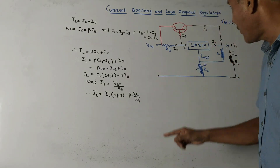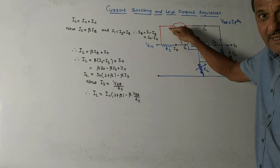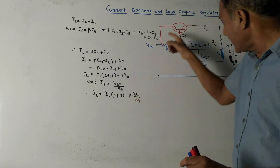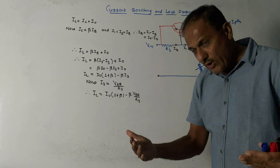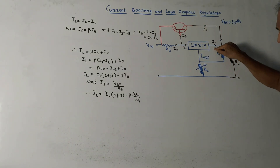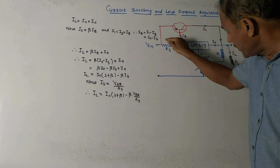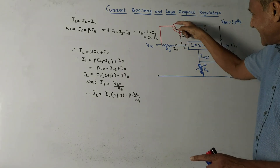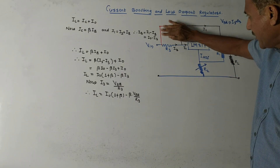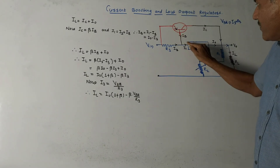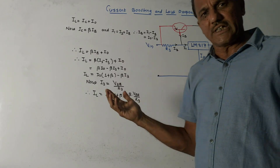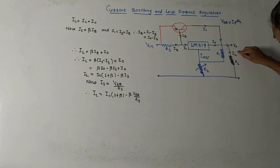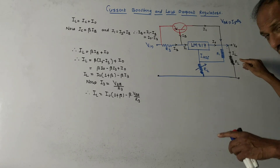If the voltage drop across R3 is less than 0.7V, the transistor will be off. The base-to-emitter voltage requirement is 0.7V — if less, transistor is off; if more, transistor is on. So if IL is small, I0 is small, I3 is small, and the voltage drop across R3 will not be sufficient to turn on the transistor. It will act like a normal voltage regulator in this case.